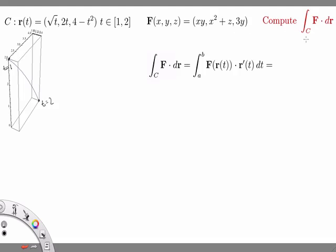We could rewrite this as the integral over C of F · t ds, if we wanted to write it as a scalar line integral where t is the unit tangent vector, which is r' over the magnitude of r'.